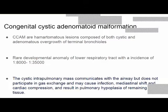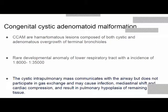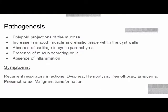Earlier it was called CCAM; now it is changed to CPAM because, while the initial diagnosis was based on the cystic nature of the disease, later understanding of the pathogenesis showed that some lesions are not cystic. The affected lung histology shows polypoid projections of the mucosa, increased smooth muscle and elastic tissue within cyst walls, absence of cartilage, presence of mucus-secreting cells, and absence of inflammation. Presentations include recurrent respiratory infections, dyspnea, hemoptysis, hemothorax, empyema, pneumothorax, or rarely malignant transformation.